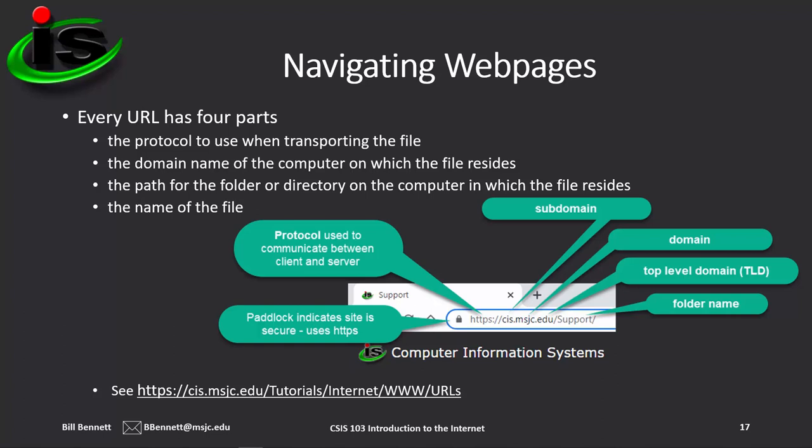After the protocol, there's the subdomain — in this case 'CIS,' the name of the actual web server — followed by the domain, which is MSJC, the corporation or company whose network that server is attached to. Then we have the top-level domain, or TLD, to the right of the domain. Every company on the web is attached to some top-level domain — either .com, .gov, .edu, .net, .io — there are many out there now, though there used to be only 13 when the internet got started.